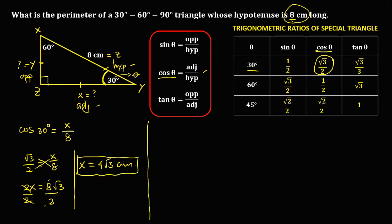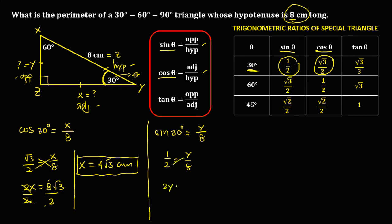To solve for side Y, since Y is the opposite and the given is the hypotenuse, opposite over hypotenuse is sine theta, and theta is 30 degrees. So sine 30 degrees equals Y over 8. Sine 30 equals 1/2, so 1/2 equals Y over 8. Cross-multiplying gives 2Y equals 8. Dividing by 2, Y equals 4 centimeters. So this is for side Y.